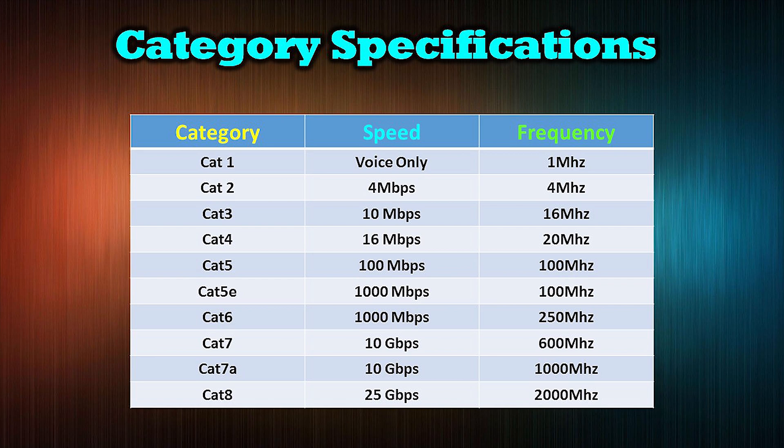Currently Cat7a and Cat8 are expensive compared to alternatives, but they provide the benefit of supporting future higher speed demands. These would be a great alternative if price is not an issue and would ensure that any installed wiring would be sufficient for your future networking needs.